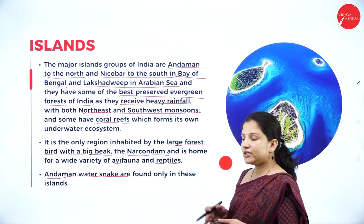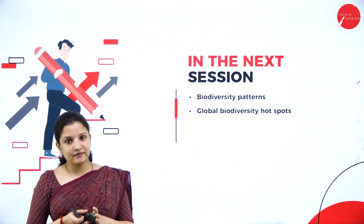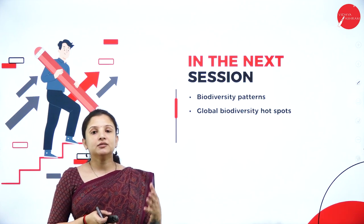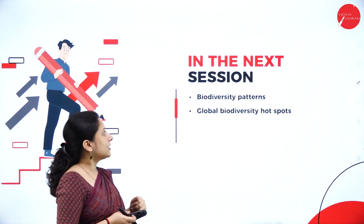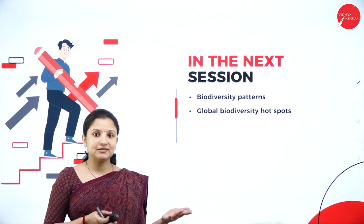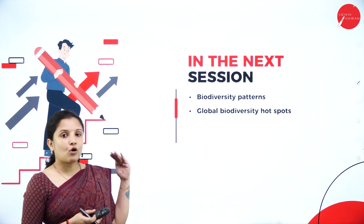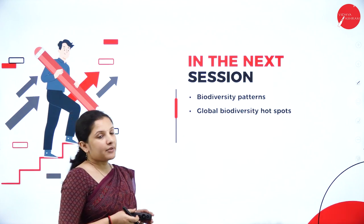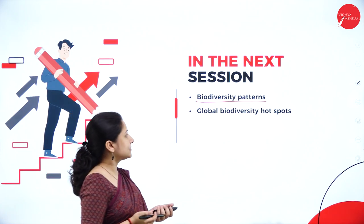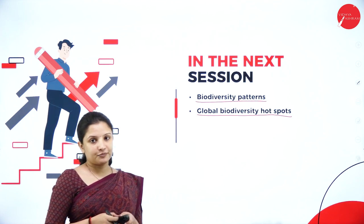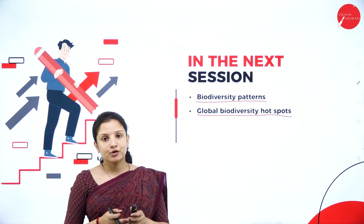In this session, we studied biodiversity under three levels: species diversity, genetic diversity, and ecosystem diversity, with species diversity being the most common study level. We also learned about India's 10 biogeographical zones based on the type of organisms living in different regions. In the next session, we shall concentrate on biodiversity patterns and global biodiversity hotspots. I hope you understood the session well. Thank you.